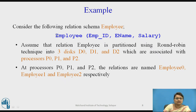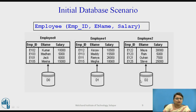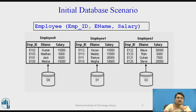These partitions are table partitions of the employee relation, partitioned as employee_0 stored at D0 with processor p0, and so on. You can see the initial database scenario with employee_0, employee_1, and employee_2 already partitioned into D0, D1, D2 using round robin. The salary values are distributed across all disks with no uniformity in the salary attribute.